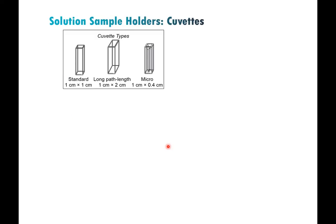For samples done in solution, you'll typically house those in a cuvette. You can also use NMR or EPR tubes as we sometimes do, but cuvettes are the best way to ensure a consistent path length and reproducible measurements. The most typical cuvette — the type we exclusively use in our lab — is one centimeter by one centimeter. They hold roughly 3.5 to 4 milliliters of solution in a standard cuvette. The path length is what's most important.